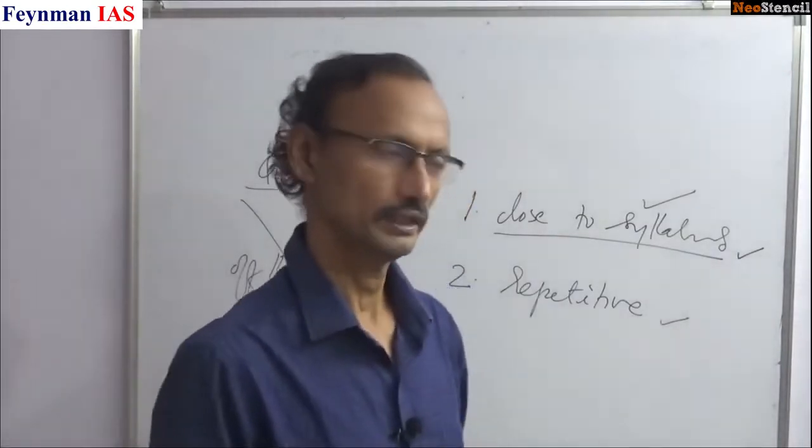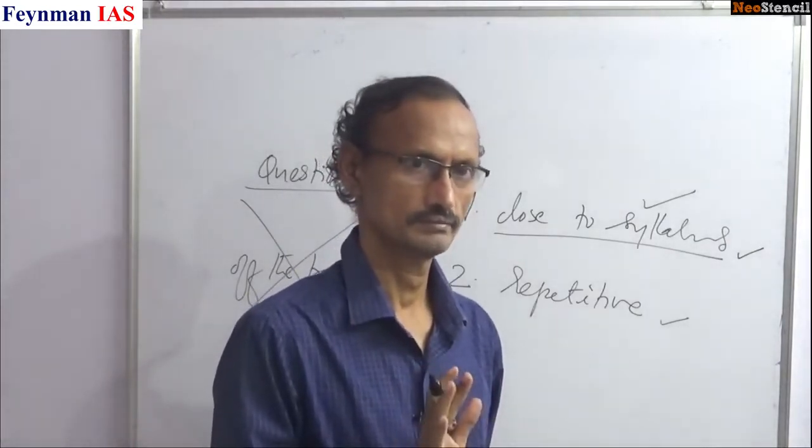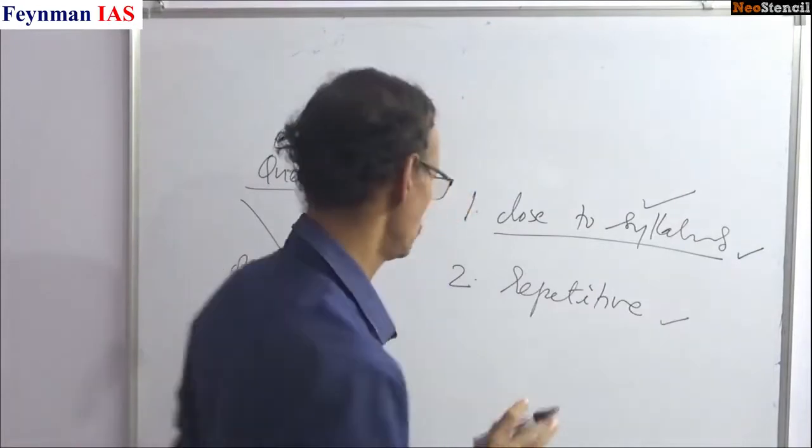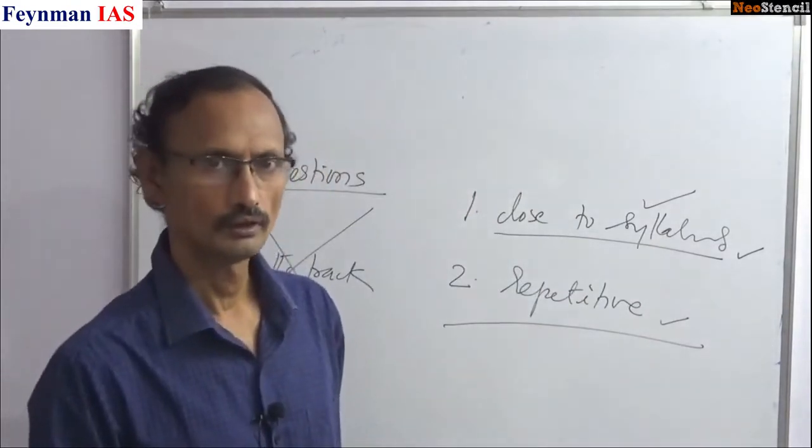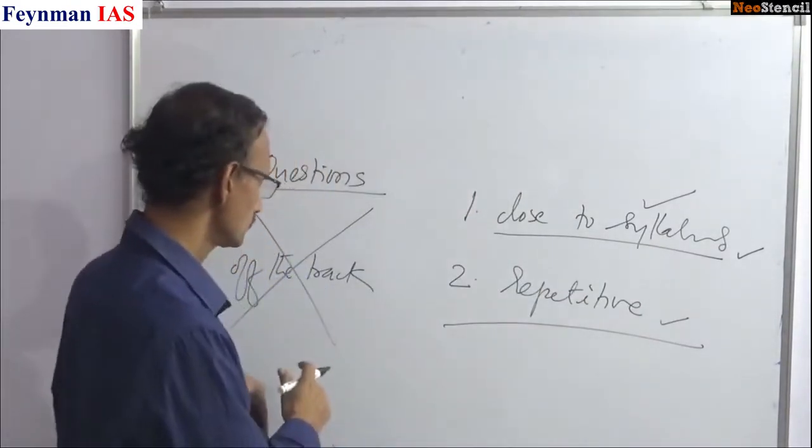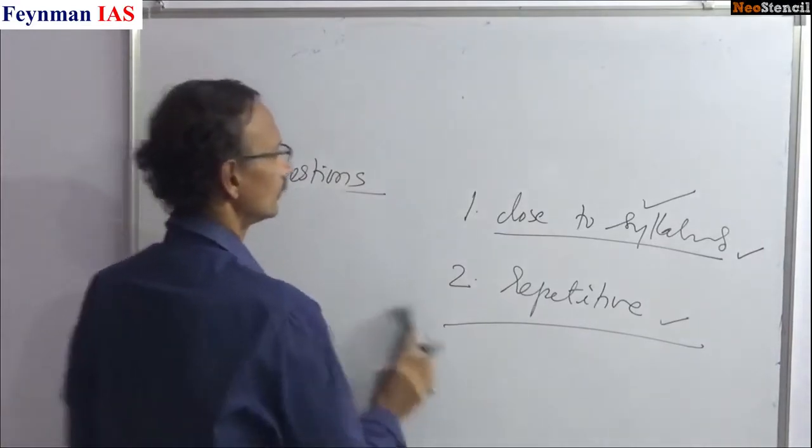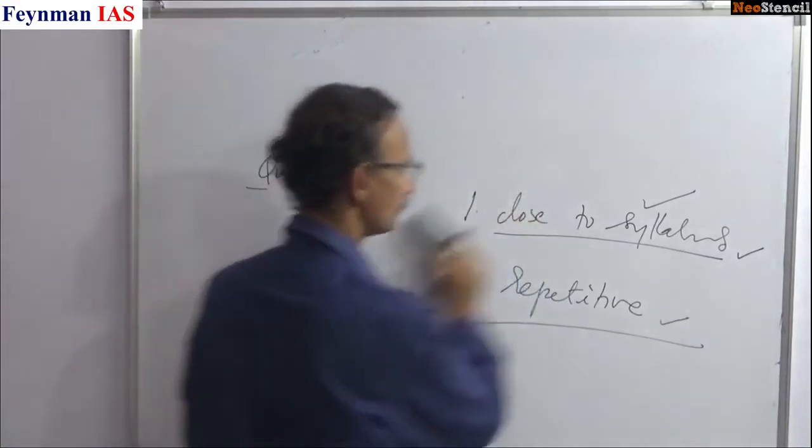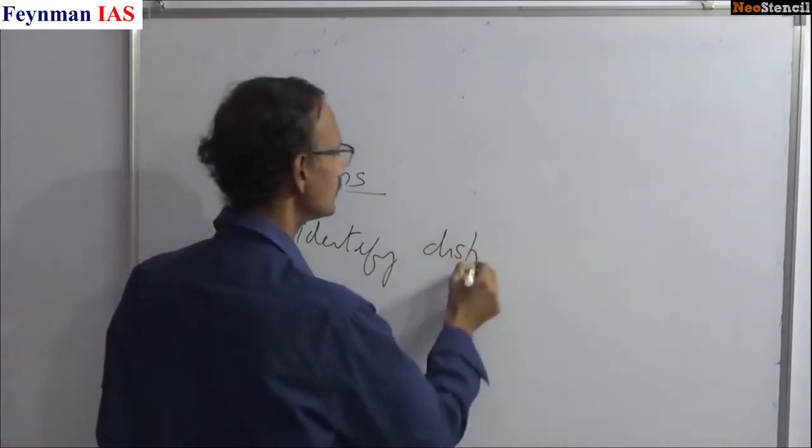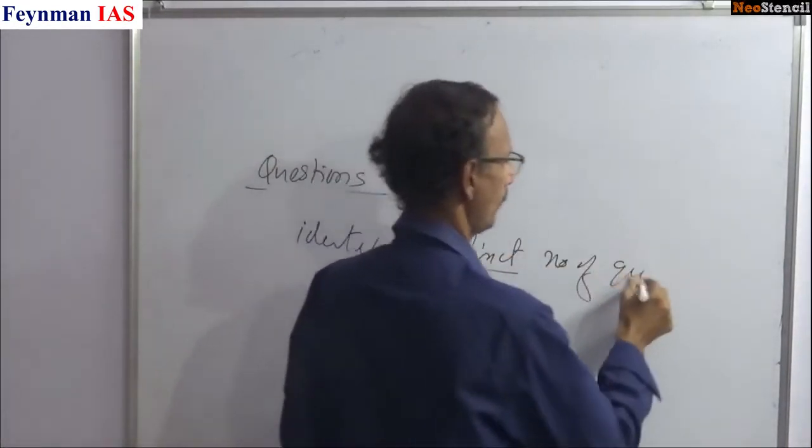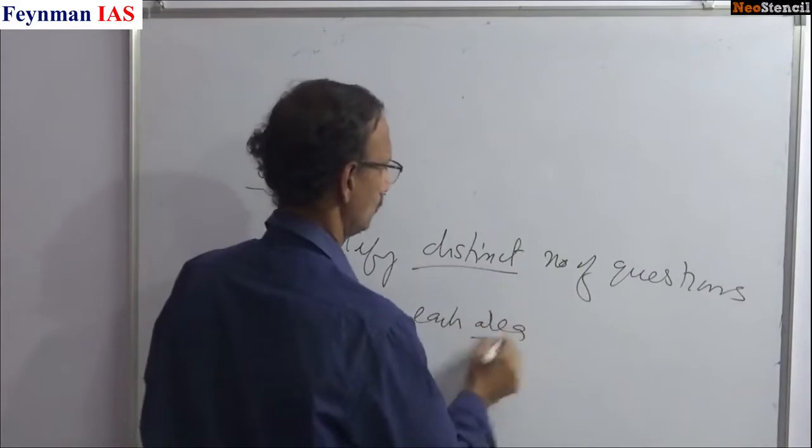Most of the paper consists of questions close to syllabus and repeated. Remember, in any optional, there will be some off-the-track questions - ignore them. Don't think you should answer any questions. Target 95% plus questions. In anthropology, if they are close to syllabus and repeated, you can. Have the syllabus and identify the questions that can come in each area. Identify distinct number of questions in each area.